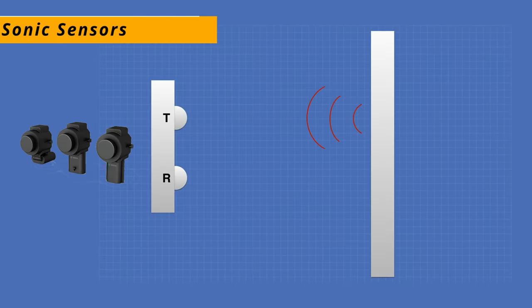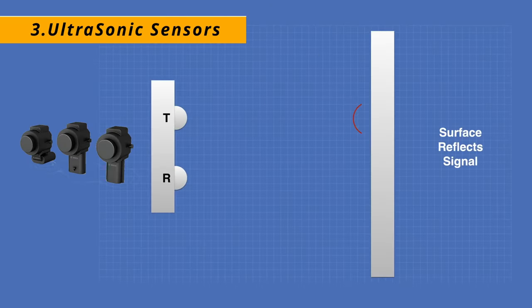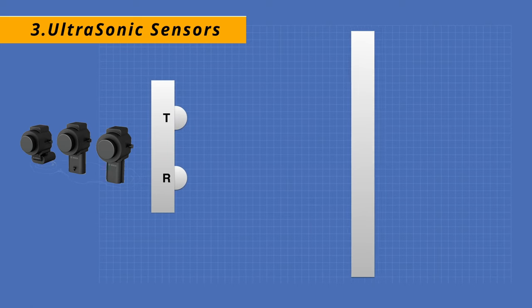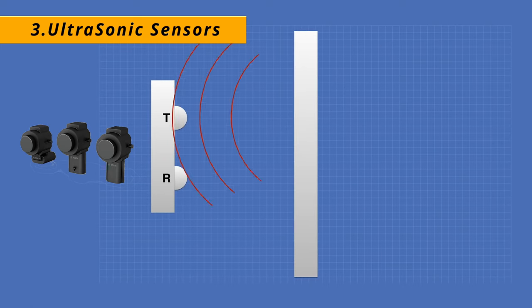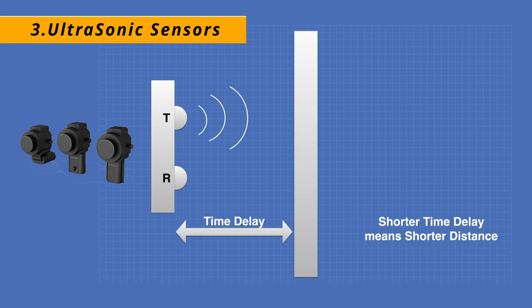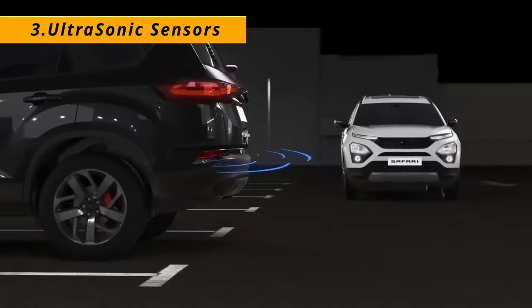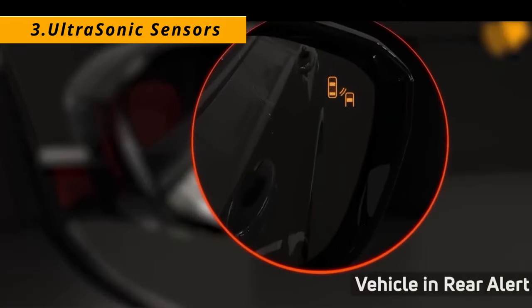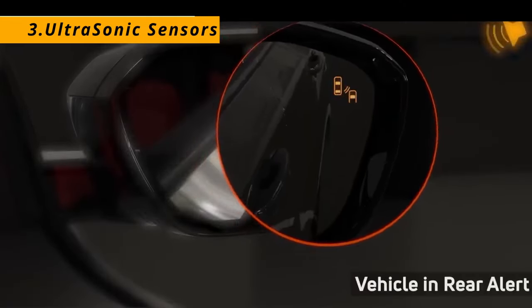Ultrasonic sensors use sound waves to measure distances to objects in close proximity to the vehicle. They are often used for parking assist systems, alerting drivers to nearby obstacles.